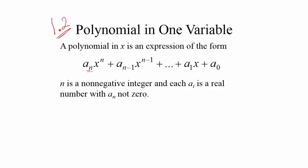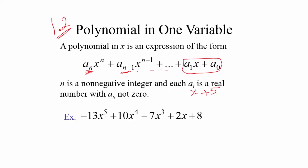For example, X + 5 is a polynomial of degree 1, because the highest power of X is 1. All other coefficients are zero, so only X + 5 remains. In this case, the coefficient of X, which is a_1, equals 1, and the constant a_0 equals 5.